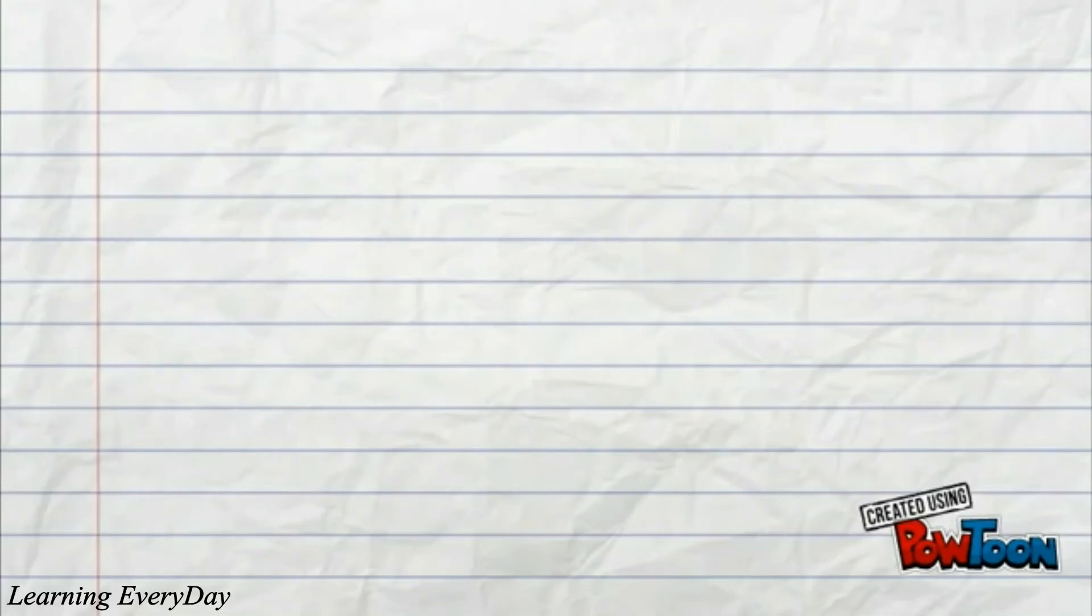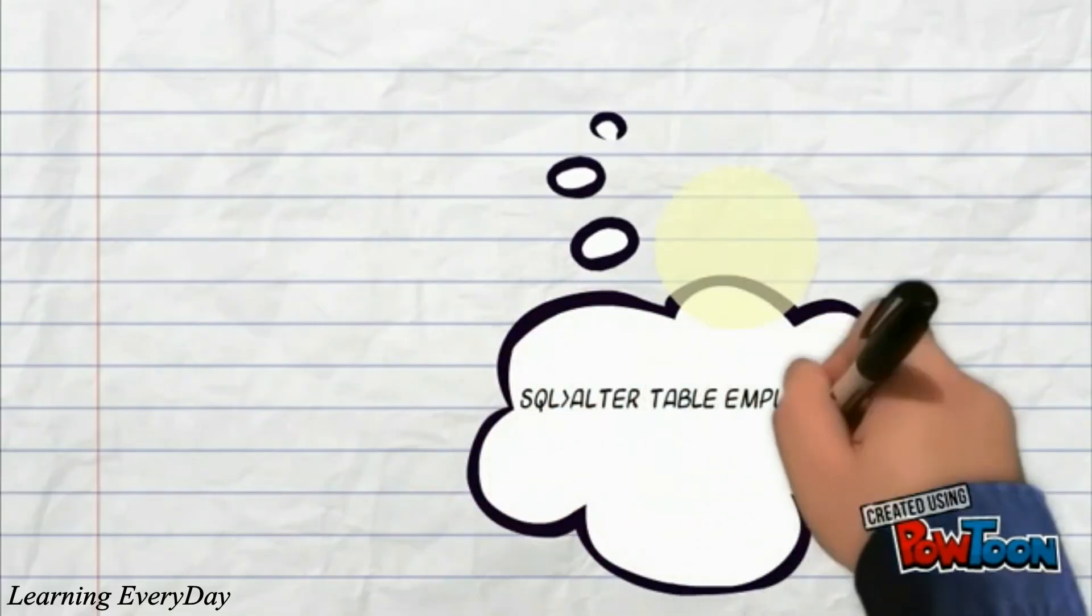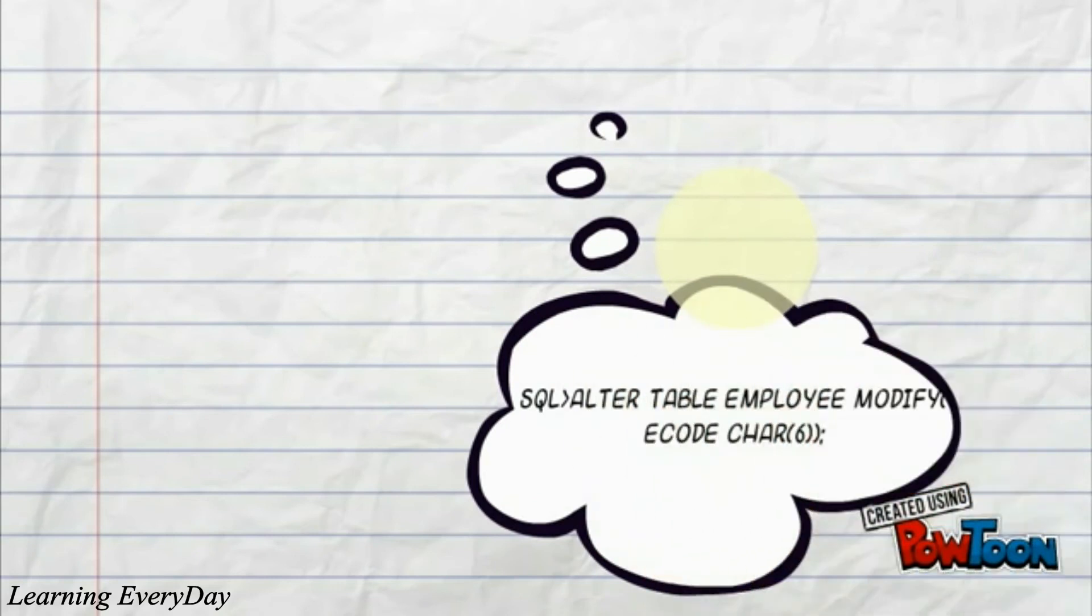Let us have a look at an example of alter table command. In this example code, you can see name of the table as employee. Here we are going to change the width of echoed column. After successful execution of this code you will see, the width of the column echoed of employee table will be 6.